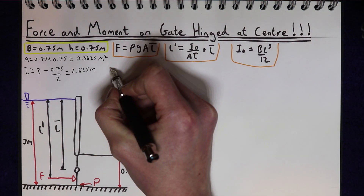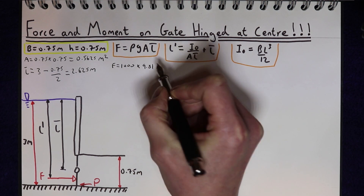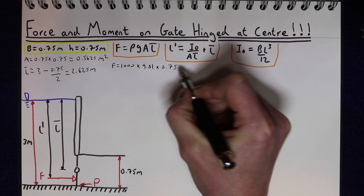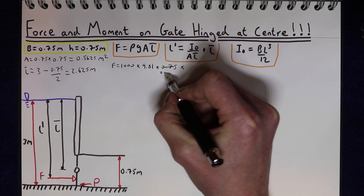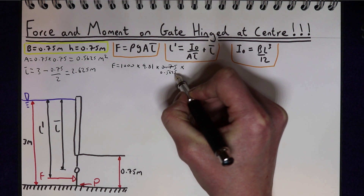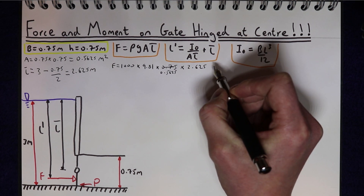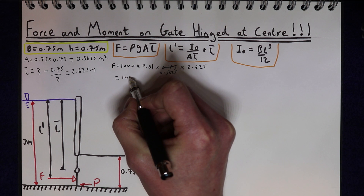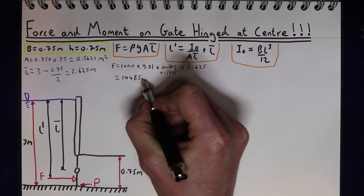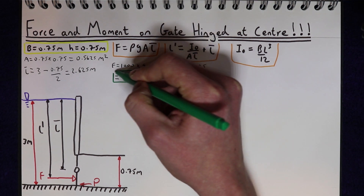Now we can work out our total force. F equals 1000 times gravity times the area of the gate, 0.5625 metres squared, times the centroid 2.625 metres. That gives us a total force of 14,485.1 Newtons pushing on the gate.